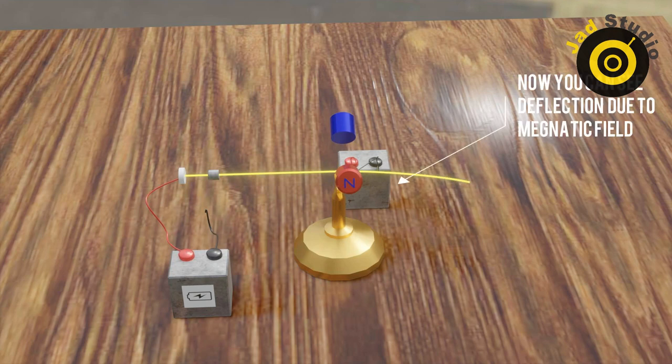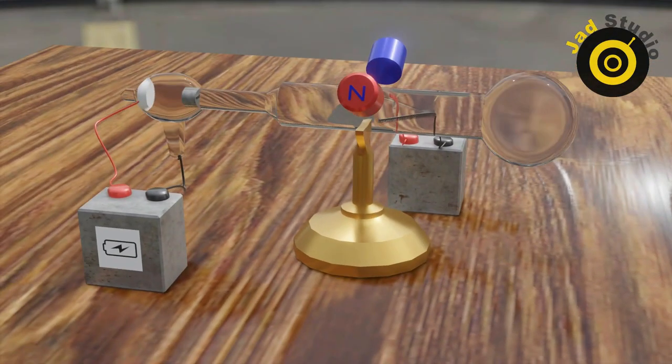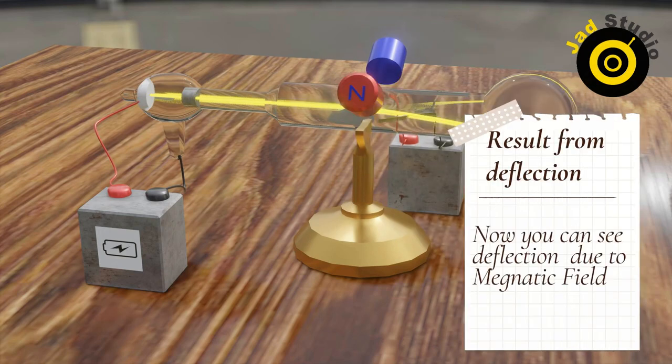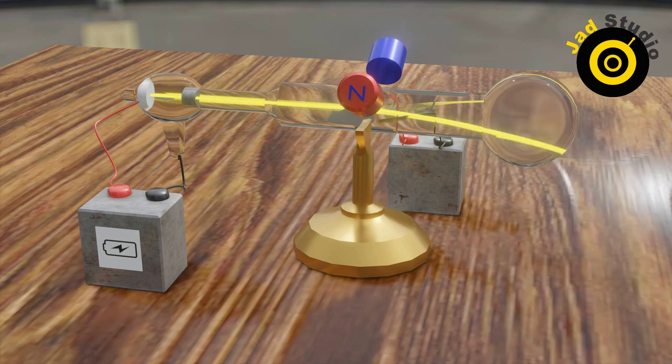Now as you can see, when the cathode ray passes near magnets it gets deflected. As I mentioned earlier, the moving charge has magnetic properties, so they can repel or attract each other, causing this deflection.